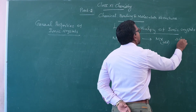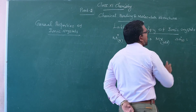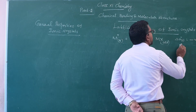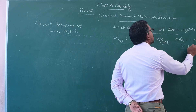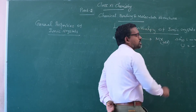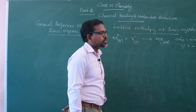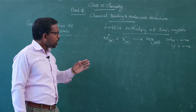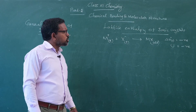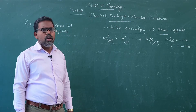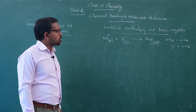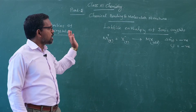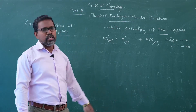The delta H naught F, the enthalpy change of formation for this reaction, is negative; or simply U is equal to negative. U means energy. Energy for this process is negative, which means the process is exothermic in nature. During the course of the process, a certain amount of energy is released.